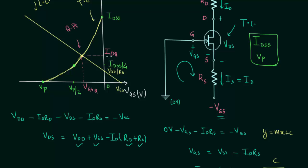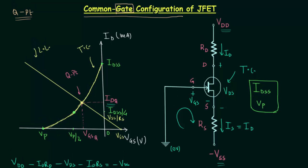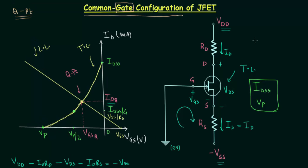This is all for this lecture. We followed the graphical approach, which is much easier than the mathematical approach. Whenever you have the common gate configuration or any other JFET configuration other than fixed bias, try to follow the graphical approach. If you have any doubt regarding this lecture, you may ask in the comment section.